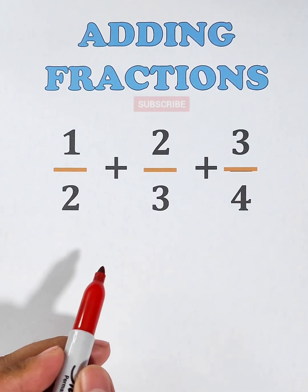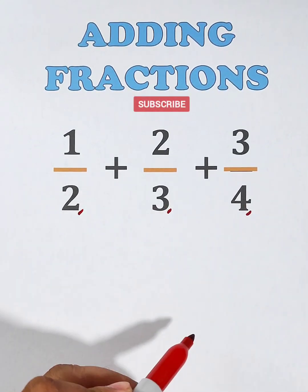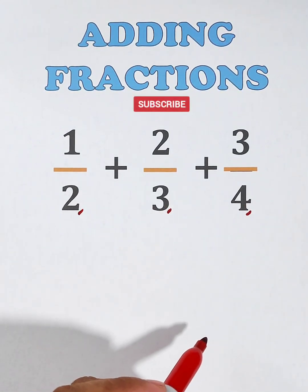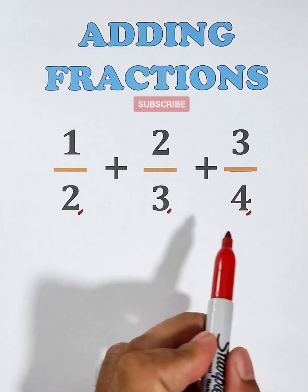First, we need to identify its LCD because they have different denominators. And to find the LCD, we need to list down the least common multiples between 2, 3, and 4.